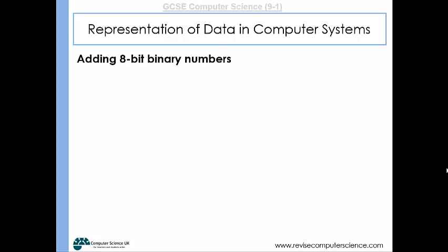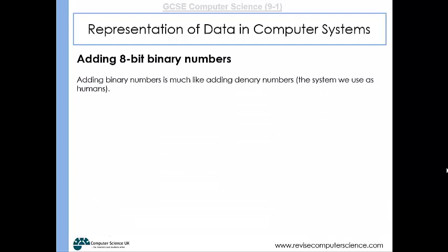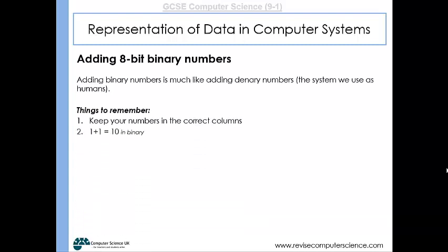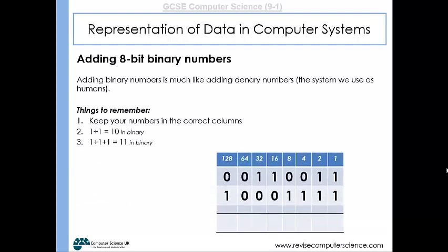Adding binary numbers is also very straightforward, providing you do the following. Keep your numbers in the correct columns. Remember that 1 plus 1 equals 10 in binary, and 1 plus 1 plus 1 equals 11 in binary. We work from right to left, just as with denary addition. If addition in a column produces a two-digit result, we carry the left-hand digit over to the next column.